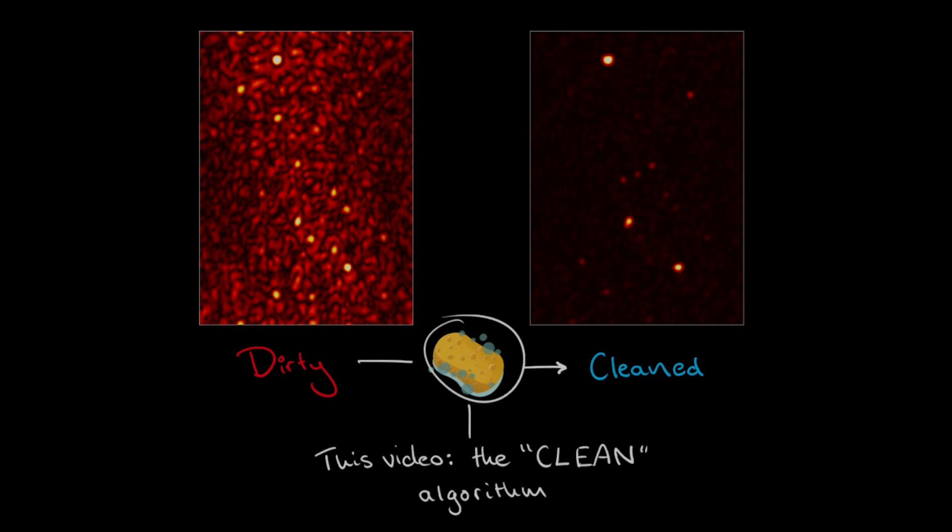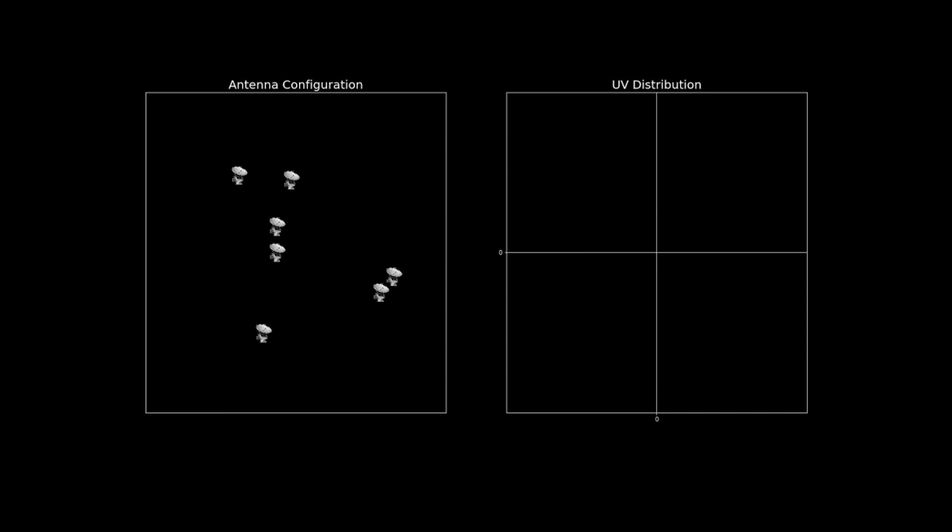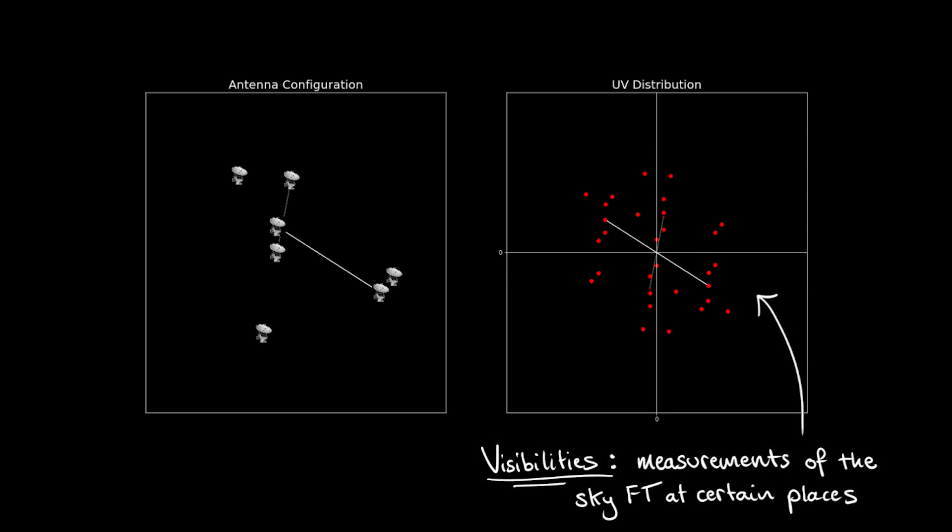As we've discussed in other videos, the data collected by an interferometer are called visibilities, which are the Fourier transform of the sky brightness distribution measured for each pair of antennas. While you can analyze the visibilities directly to do your science, typically you'll want to convert the visibilities into an image.